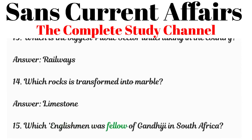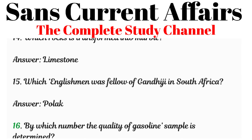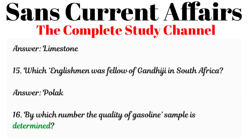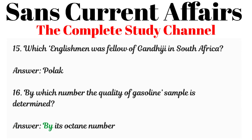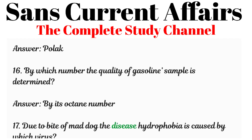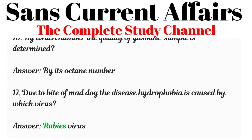Question 15: Which Englishman was a fellow of Gandhiji in South Africa? Answered: Pollock. Question 16: By which number is the quality of a gasoline sample determined? Answered: By its octane number. Question 17: Due to the bite of a mad dog, the disease hydrophobia is caused by which virus? Answered: Rabies virus.